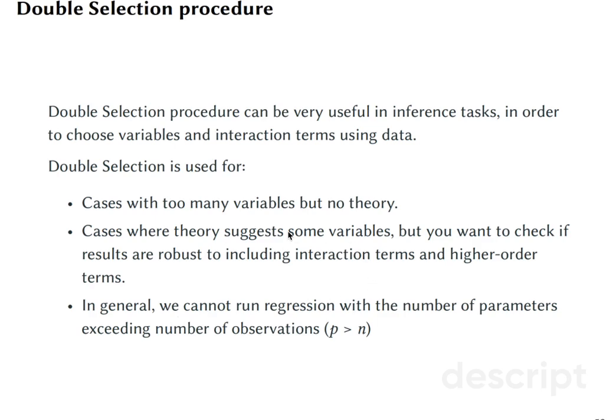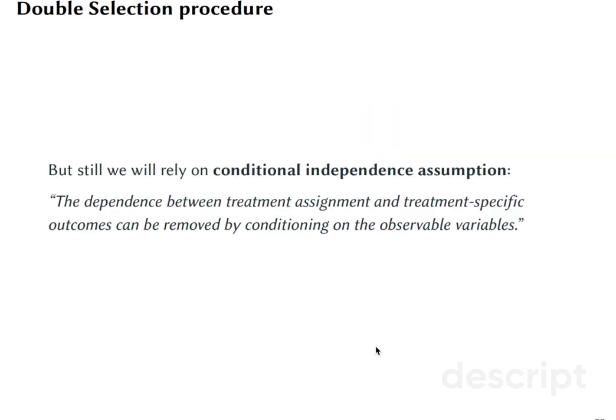In general, we cannot run regression with the number of parameters exceeding the number of observations. So if we had to include all the interaction terms between all the variables, we will easily get our number of covariates higher than the number of observations. So this is a problem.